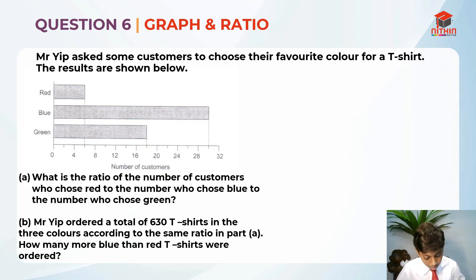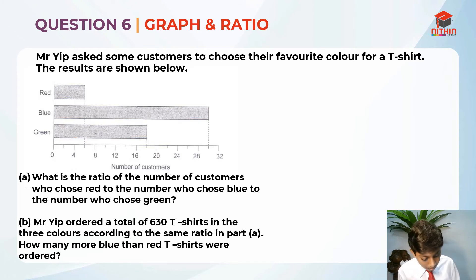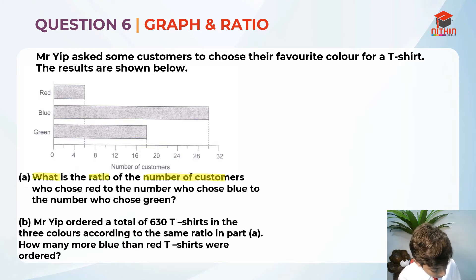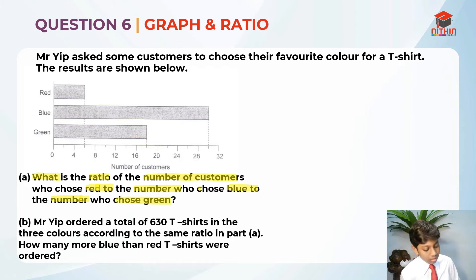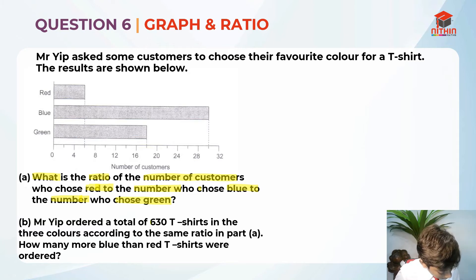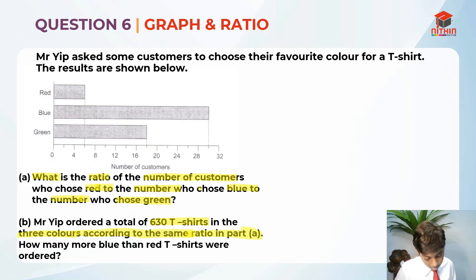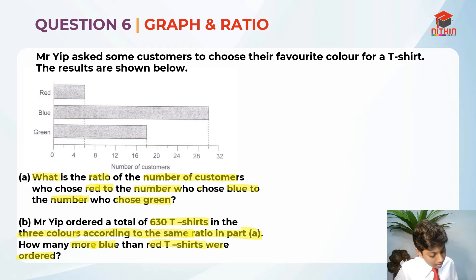Now we should highlight the key information. For part A: what is the ratio of the number of customers who chose red to the number who chose blue to the number who chose green? For part B: Mr. Yip ordered a total of 630 t-shirts in the 3 colours according to the same ratio in part A. How many more blue than red t-shirts were ordered? So they are asking us the difference.